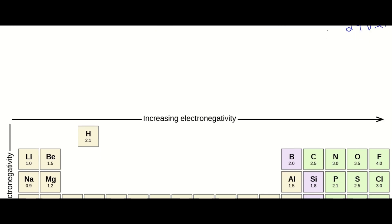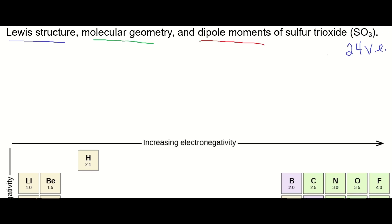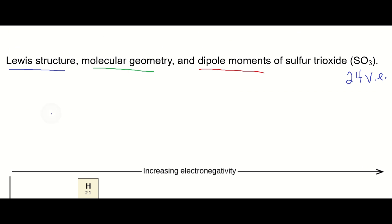Next, sulfur goes in the center because it's less electronegative. So put sulfur in the center, surrounded with the three oxygens. Next, we need a bonding pair between each of the terminal atoms and the central atom. Each of those bonding pairs uses up two valence electrons. We're down to 18.